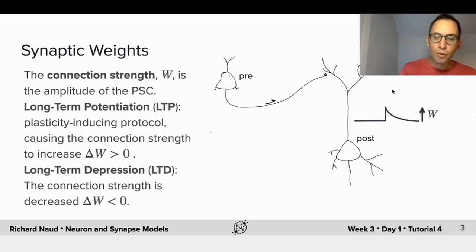The amplitude of this postsynaptic current is what we call the synaptic weight. Now, if we make some type of plasticity protocol, we make the presynaptic and postsynaptic neuron fire, this postsynaptic current, when we trigger the presynaptic cell again, might increase. If it increases, such as shown here, we call this long-term potentiation, or potentiation simply.